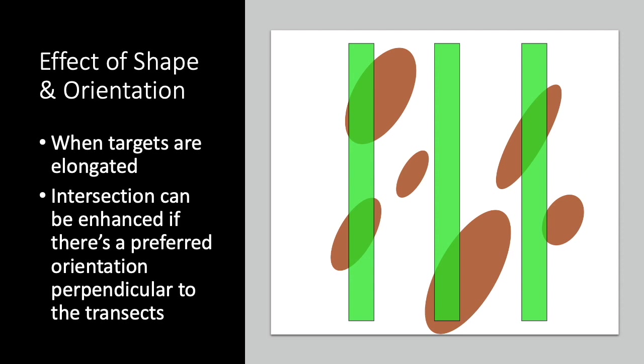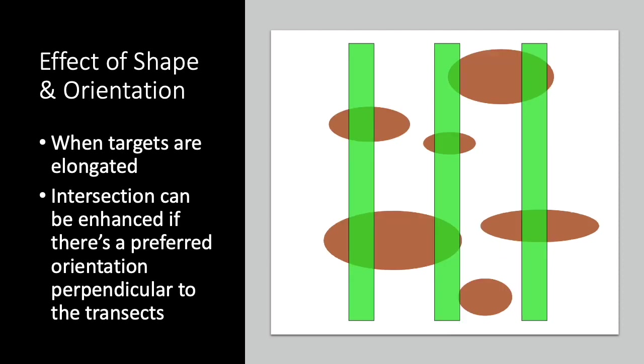Since we usually can't assume that sites are circular, other factors to consider are the shape and orientation of sites. Often sites are elongated, and if they have a preferred orientation, that can impact our likelihood of intersecting them with transects. When the transects are diagonal to the preferred orientation of sites, we have greater chance of intersecting them. When they're perpendicular to that preferred orientation, the probability of intersecting them is higher still.